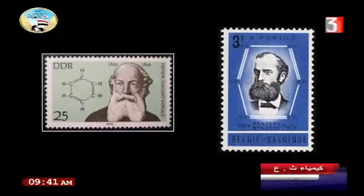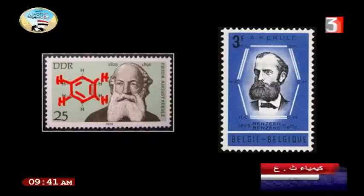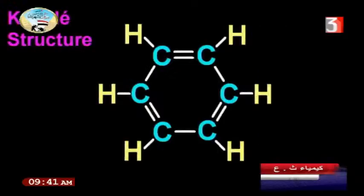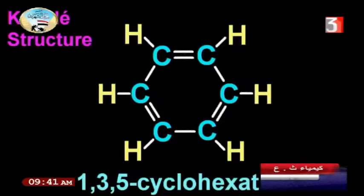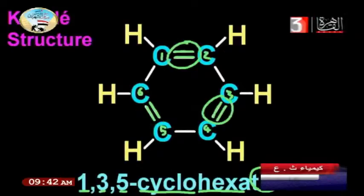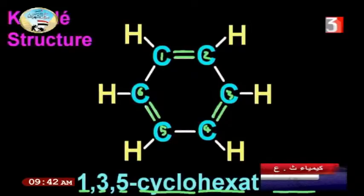Kekulé explained different structures for benzene: 1,3,5-cyclohexatriene, meaning double bonds at positions one, three, and five. The IUPAC name would be cyclohexatriene — alternating double and single bonds. However, this is the old historical structure according to Kekulé, because the modern view says the bonds can exchange — from single to double — due to electron delocalization.